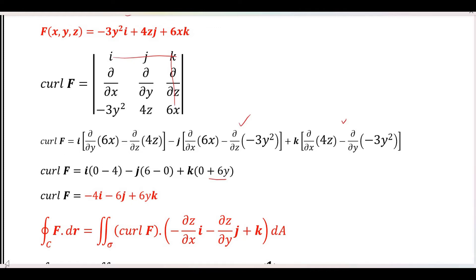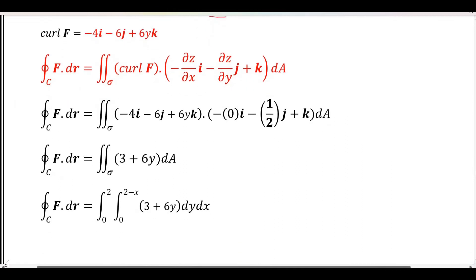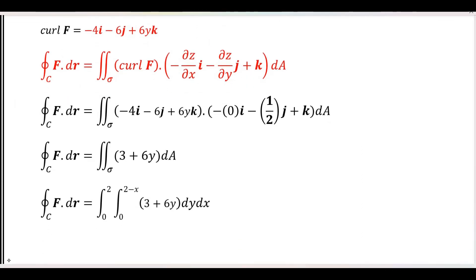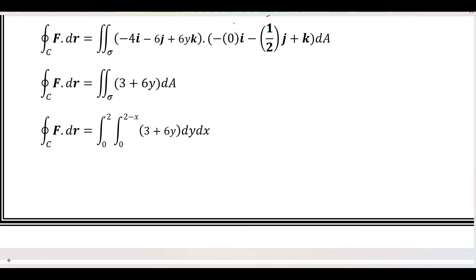So curl is determined. Now we substitute the curl formula. We apply partial y, partial z, partial x, and partial z, partial y, partial z, partial y. The dot product is computed by multiplying corresponding entries: i·i, j·j, k·k.